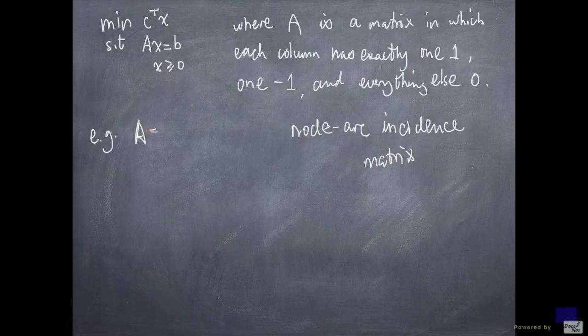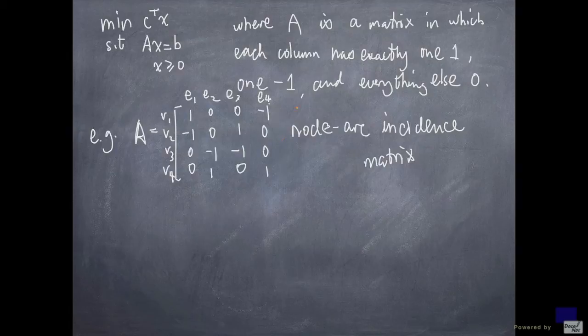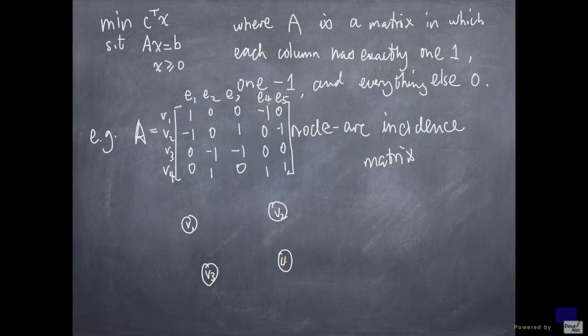So suppose that my matrix A is the following. So what we do is, for each row I am going to label them v1 up to v4. And each column I am going to label e1 up to e4. Let me add one more column. So what I am going to do is, I am going to draw 4 circles, so the last column is e5. Each one is one of these v's, so v1, v2, v3, and v4.